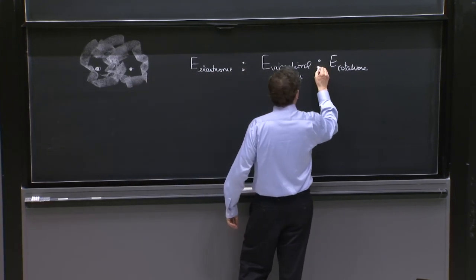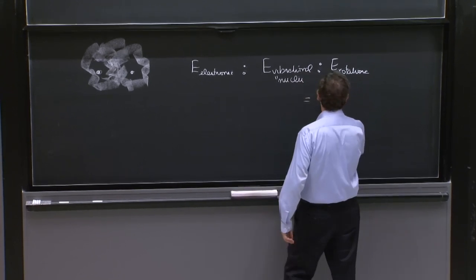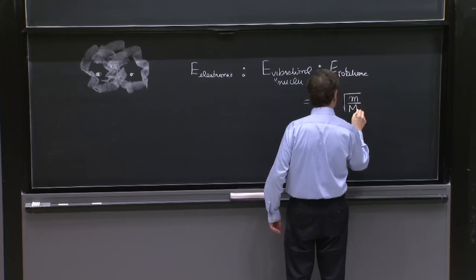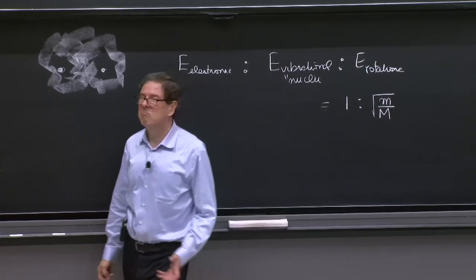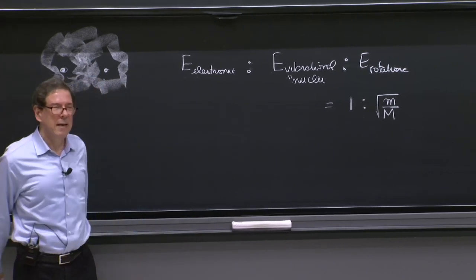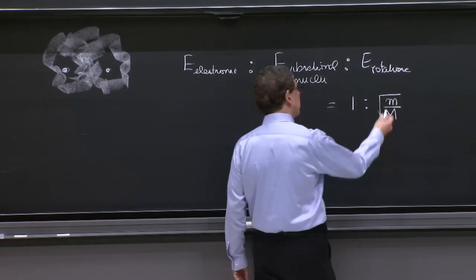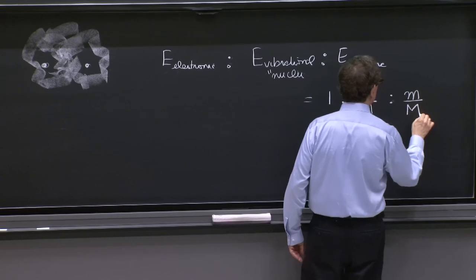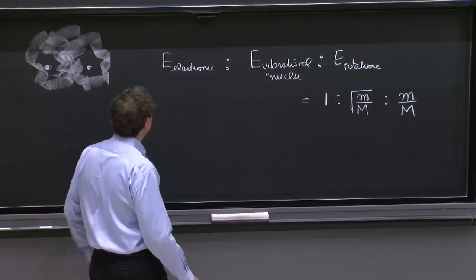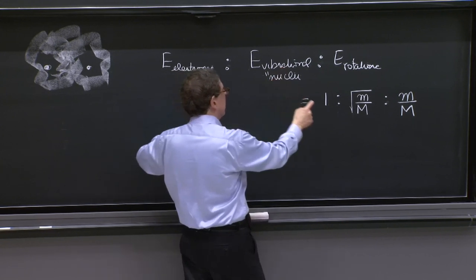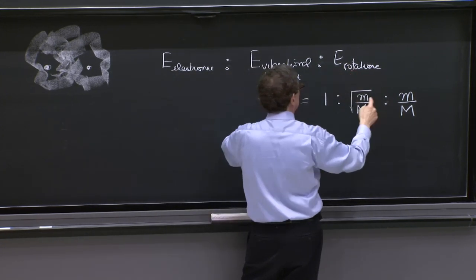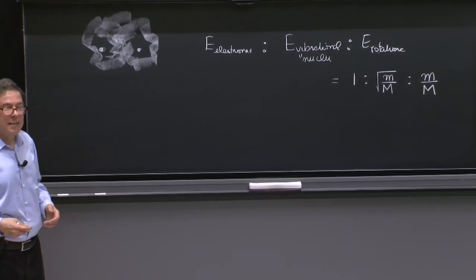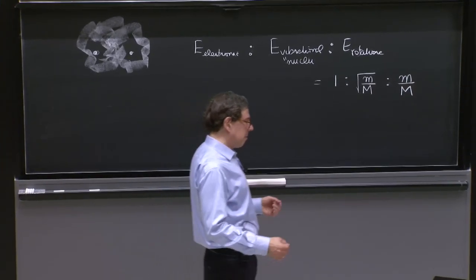The ratio was like 1 to square root of little m over M, where little m represents the electron mass and capital M the nuclear mass. That number could be 10 to the minus 2. And then you have m over M. So the electronic energy is larger than the second one like 1 is larger than that, and the ratio between vibrational and rotational is this.